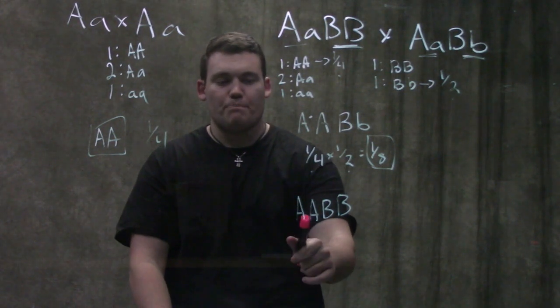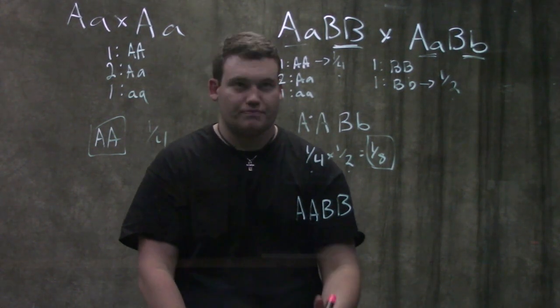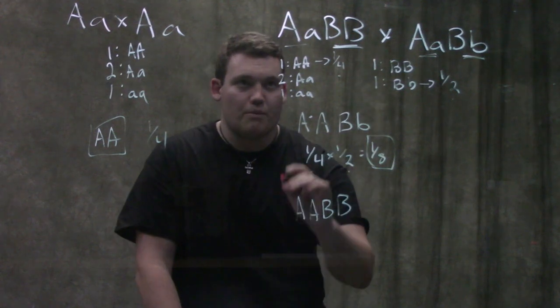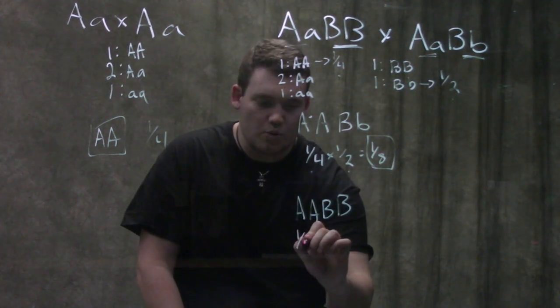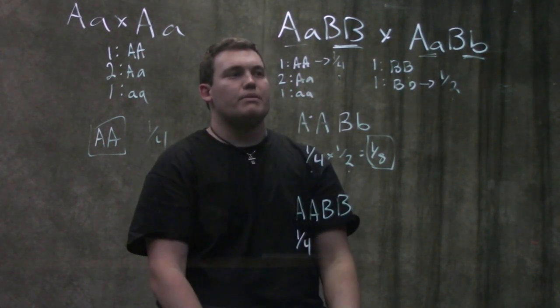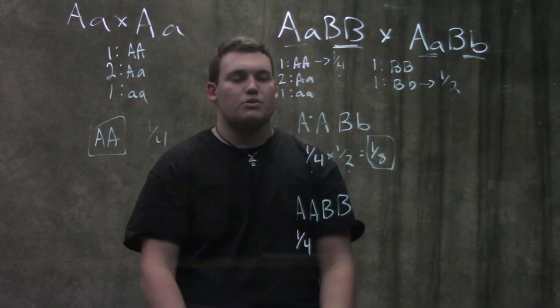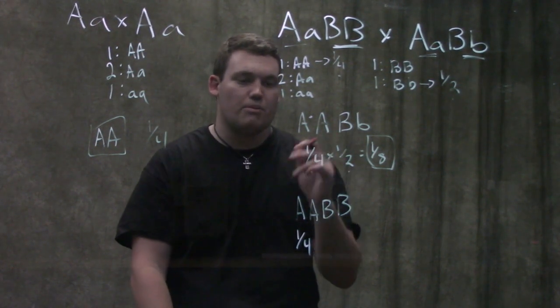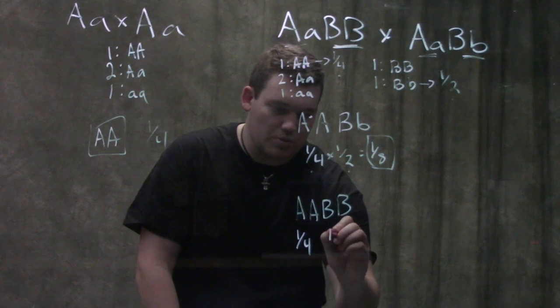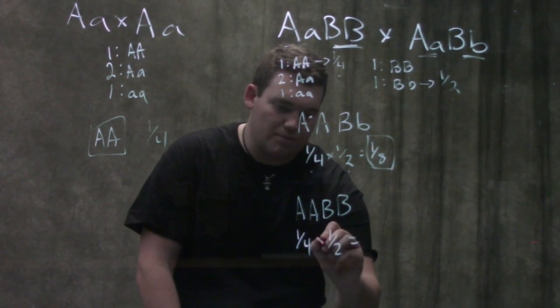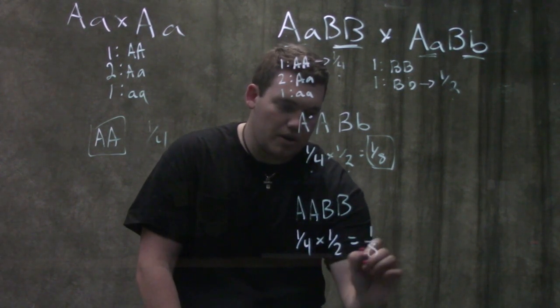But back to this problem, big A big A, big B big B. Big A big A, when we're crossing two heterozygotes, that's a quarter. And then big B big B, if we're crossing two heterozygotes or heterozygote and homozygous dominant, that is one half. So we're going to end up with the same probability as last time, a one eighth chance.